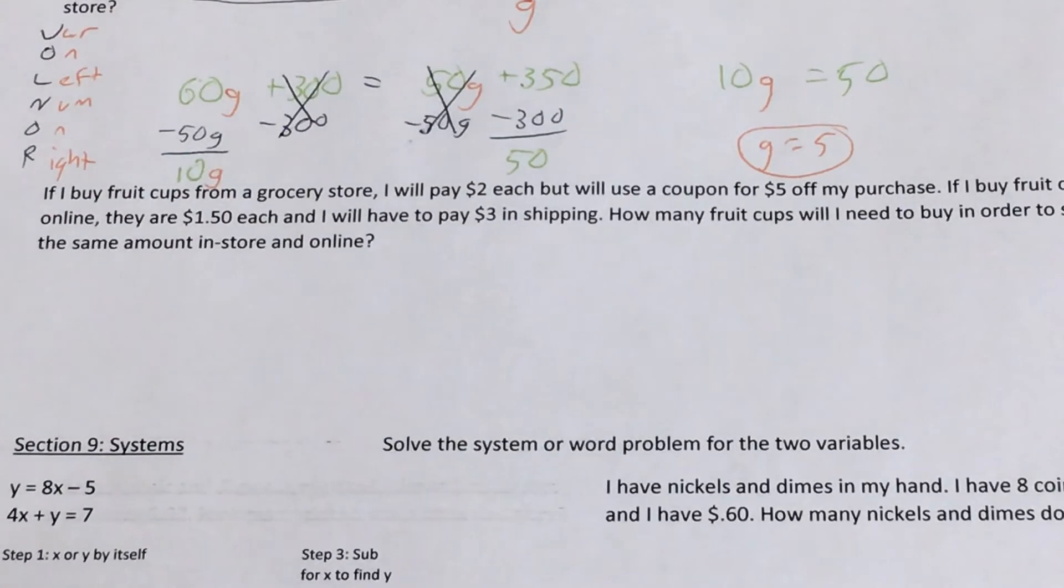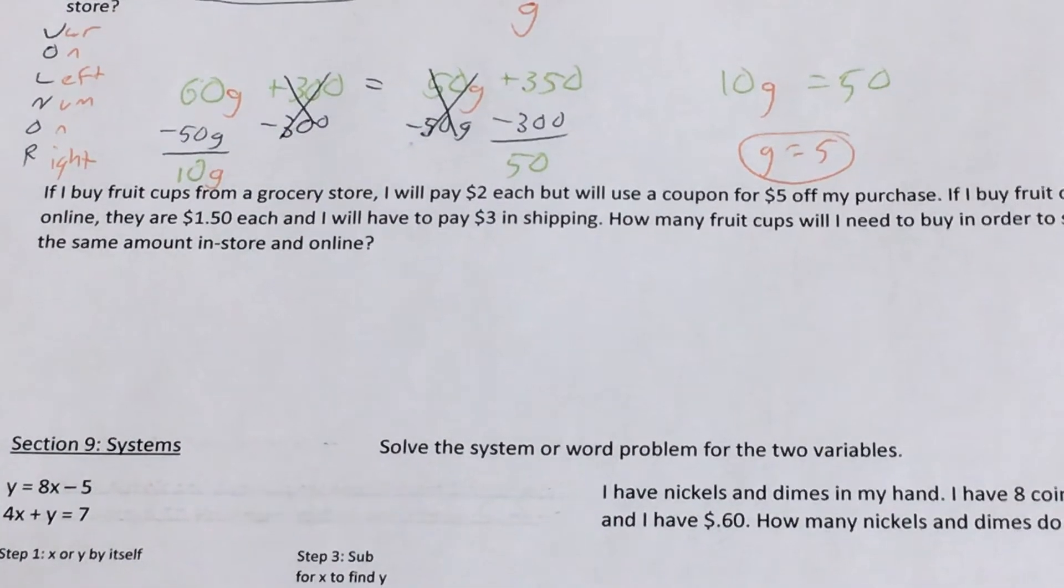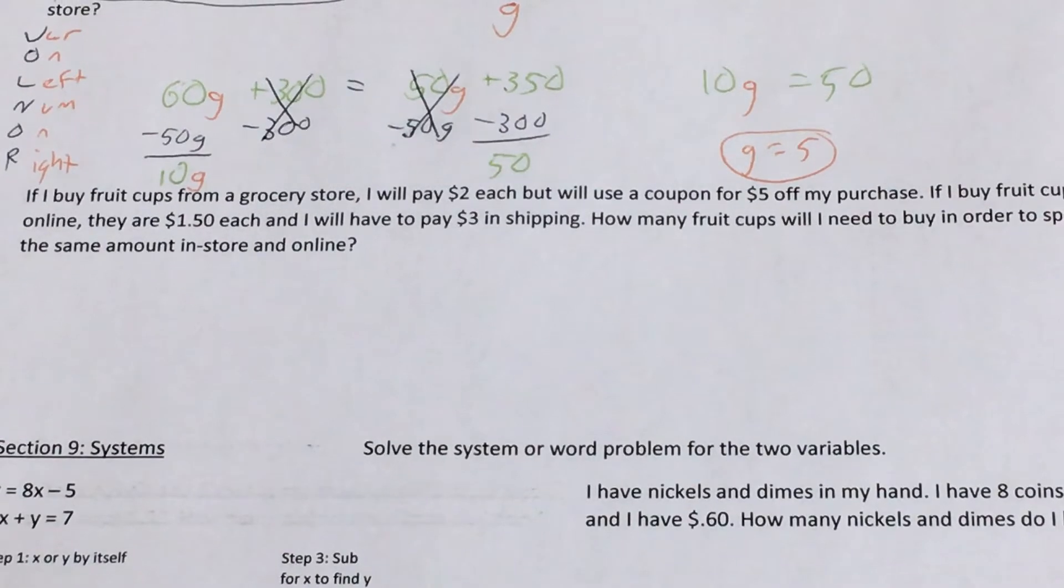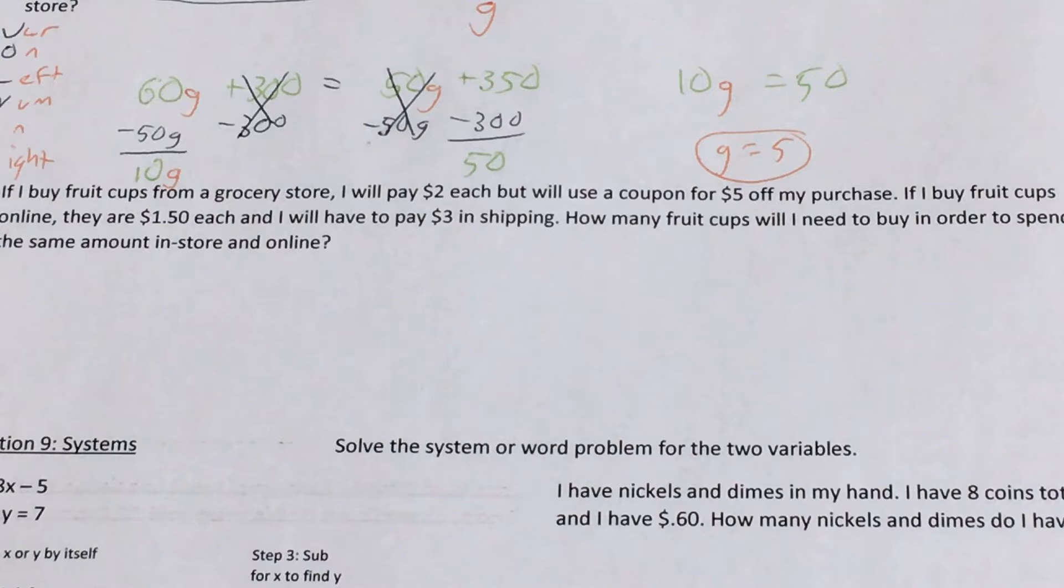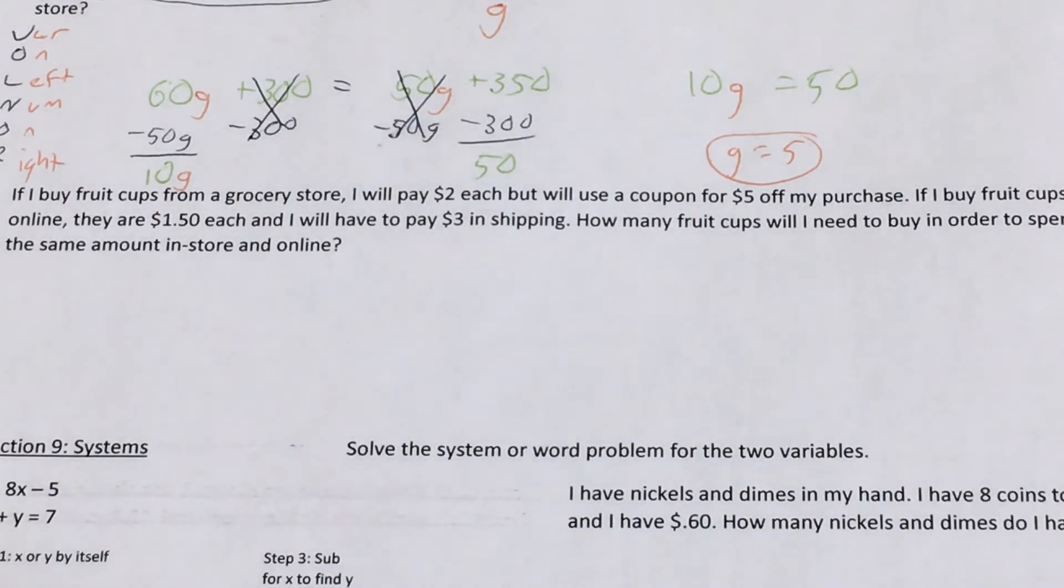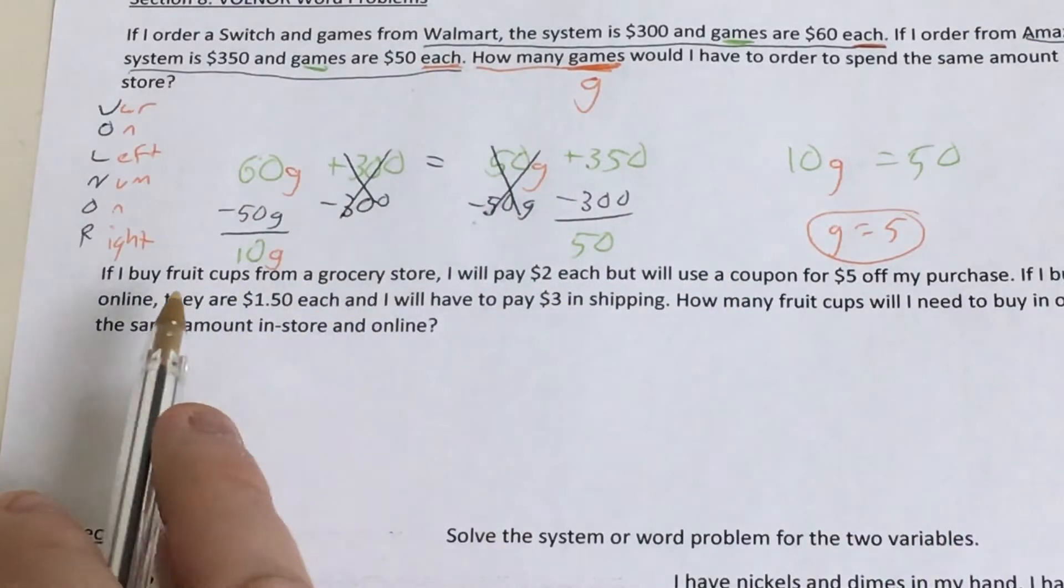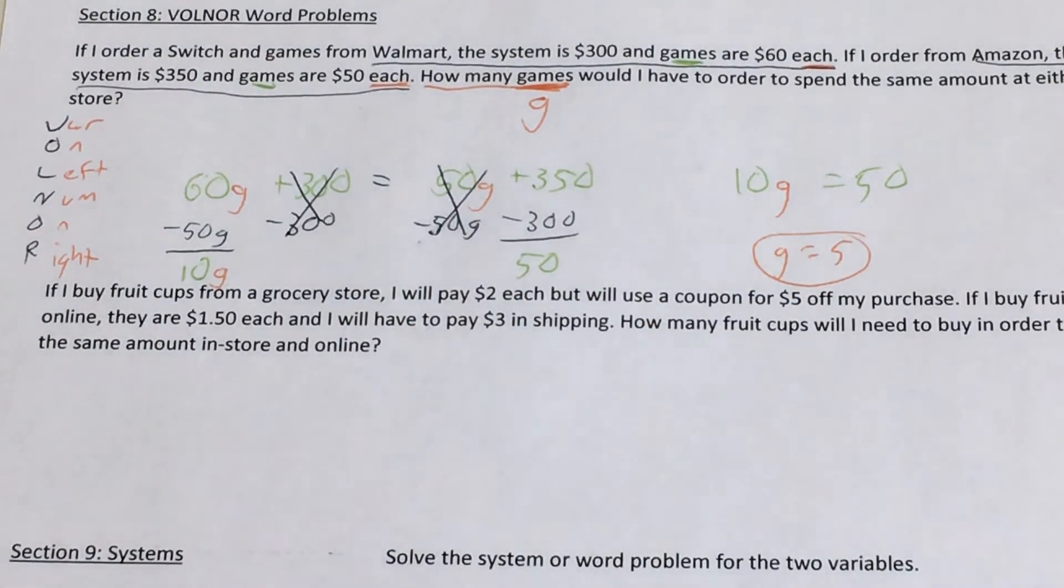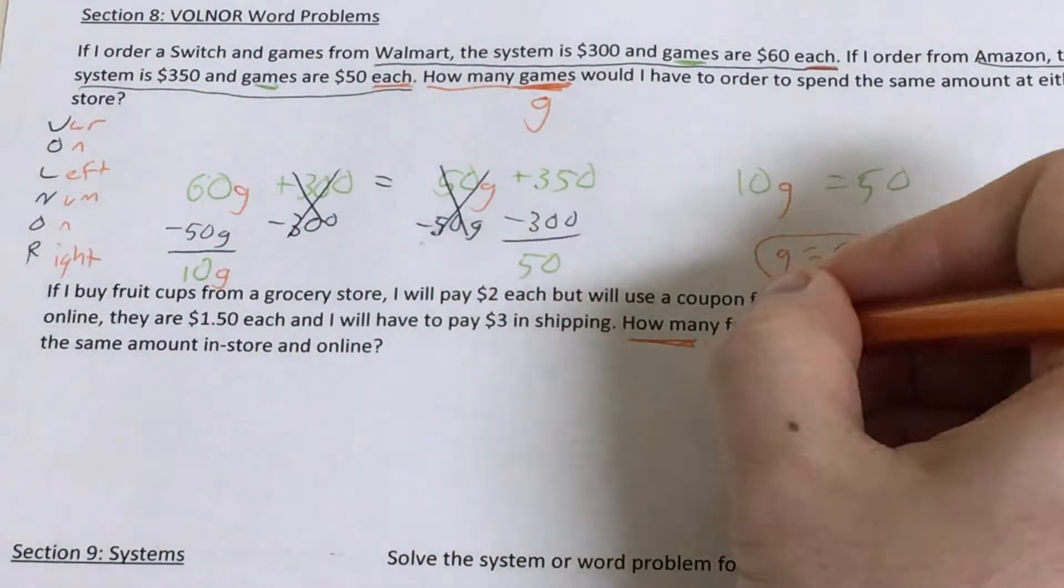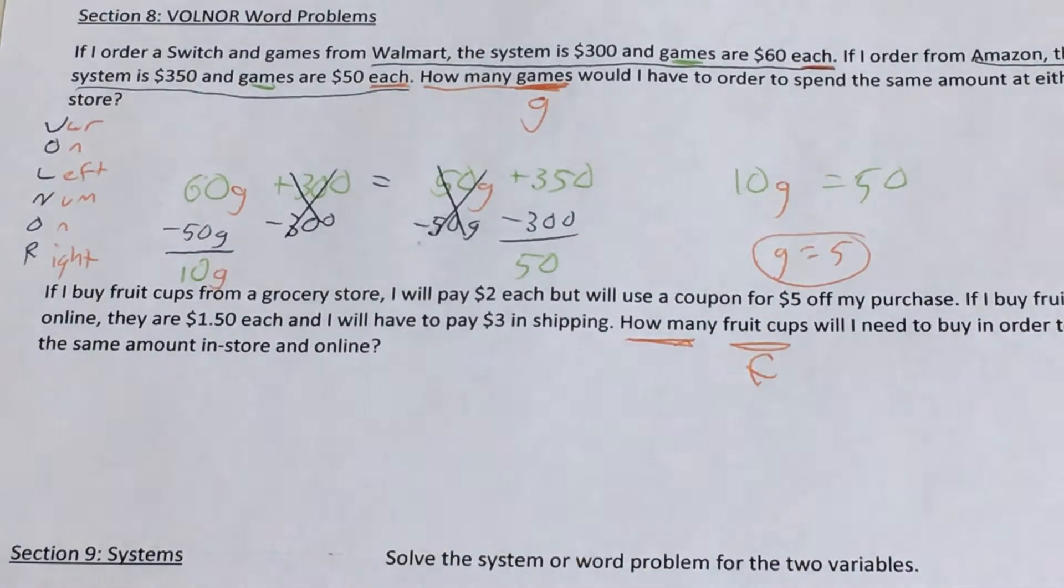So let's move on to this next one. My students know that I like fruit cups, so I made up a problem about fruit cups. If I buy fruit cups from a grocery store, I'll pay $2 each, but I can use a coupon for $5 off my purchase. And if I buy fruit cups online, they're $1.50 each, but I'll have to pay $3 in shipping. How many fruit cups will I need to buy in order to spend the same amount in store and online? So once again, I am just looking at this information. First thing I see is 'how many fruit cups.' Since I see 'how many,' this thing right here, F, is going to end up being my variable, F.